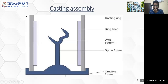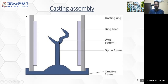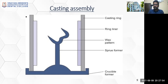The casting assembly basically contains a base — your crucible former — over which, with the help of your sprue, you mount your wax pattern. Once this wax pattern is mounted or picked up by the sprue former, it will be mounted over the crucible former. Once the crucible former, sprue former, and wax pattern are ready and set, you encompass the whole thing with a casting ring lined by certain ring liners. You have different liners each serving different purposes. This whole setup is termed your casting assembly.